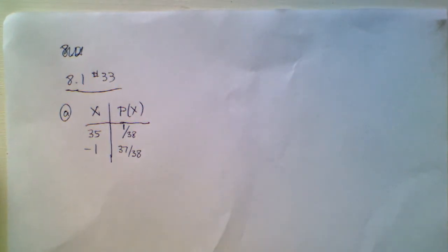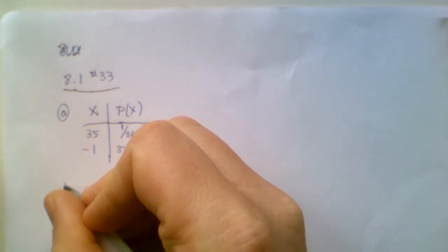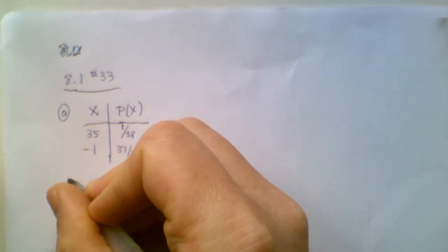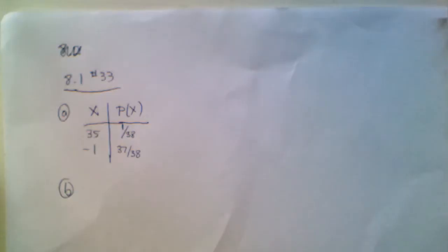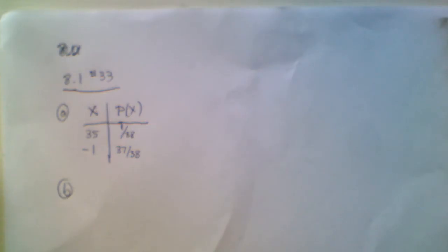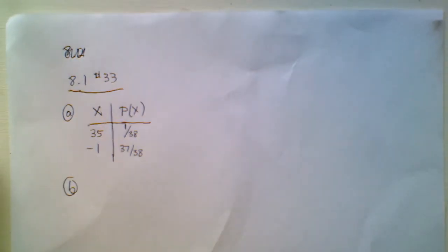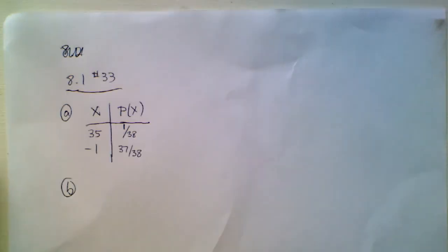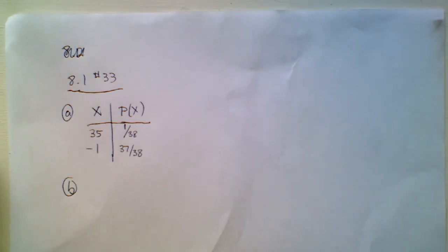Part B says: determine the mean and standard deviation of the random variable x. Round your results to the nearest penny.